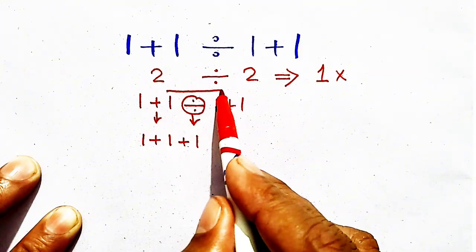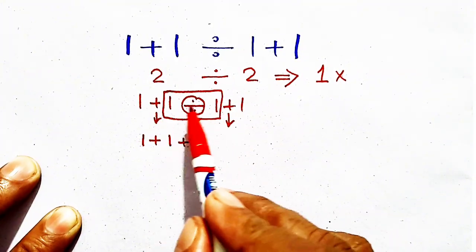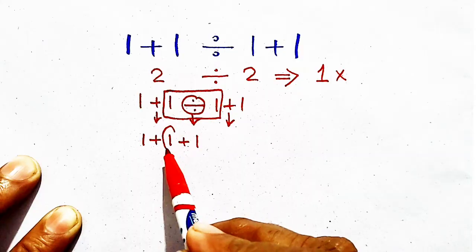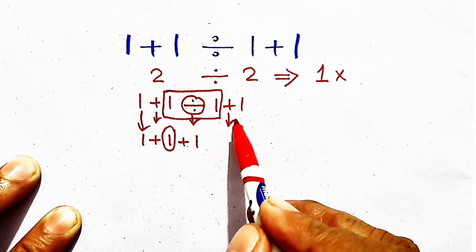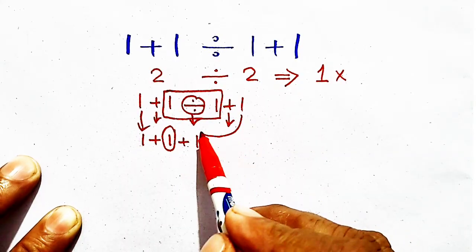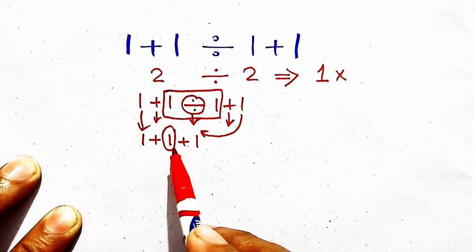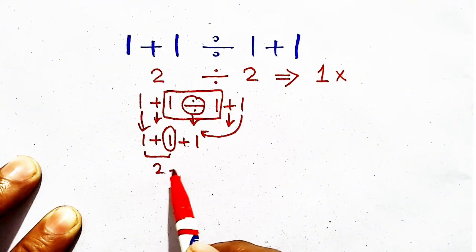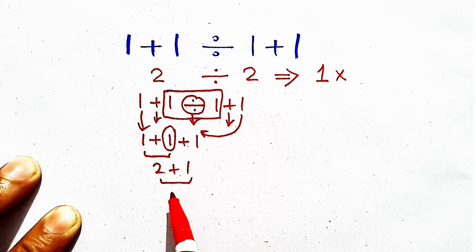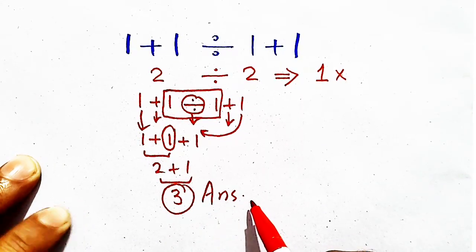Now we have solved this step because 1 divided by 1 is 1. So 1 plus 1 plus 1: 1 plus 1 is 2, plus 1 which will be equal to 3. So 3 will be our correct answer.